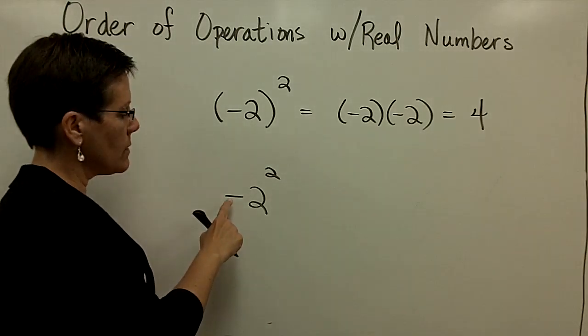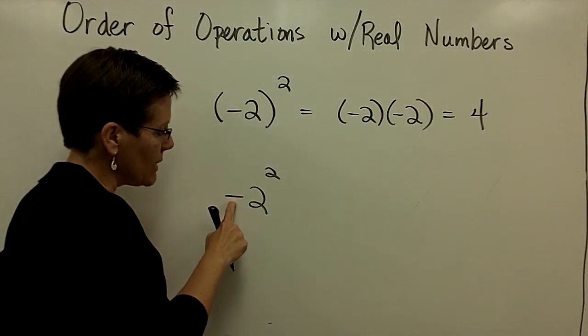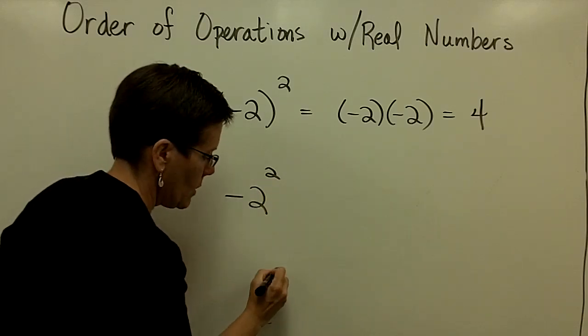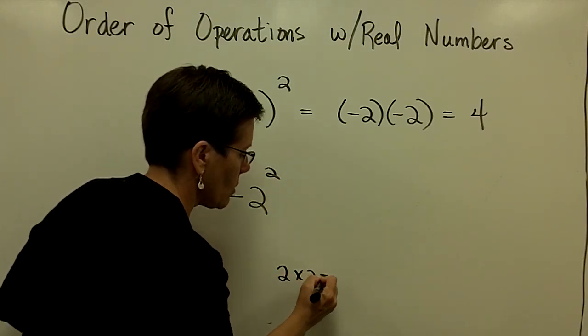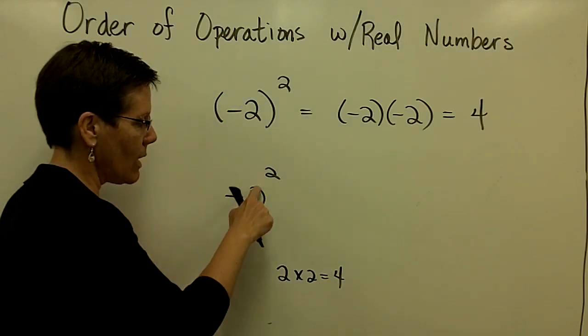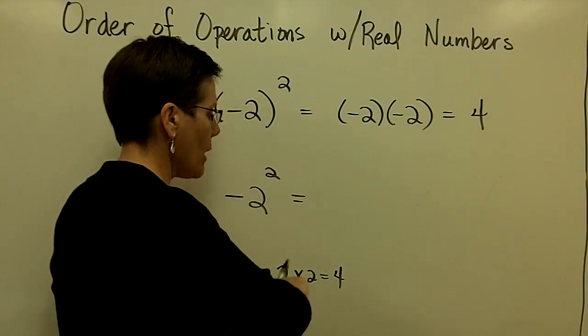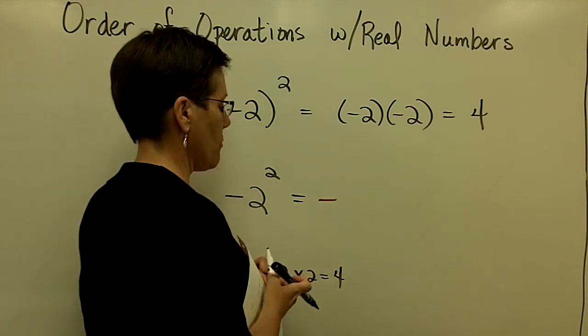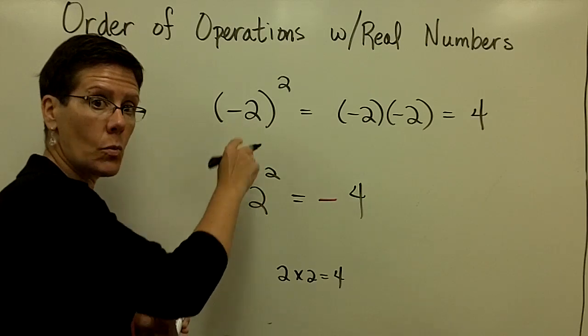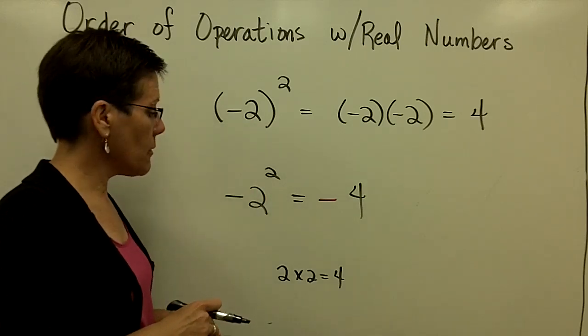This problem says to give me the opposite of 2 squared. 2 squared is 2 times 2, which is 4. I want the opposite of that 4. So I want negative 4 for that problem, not positive 4. All the difference in the world when you have parentheses versus not.